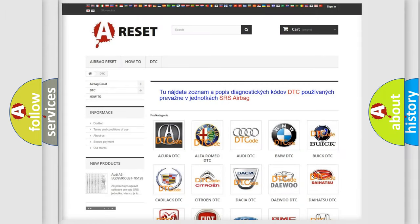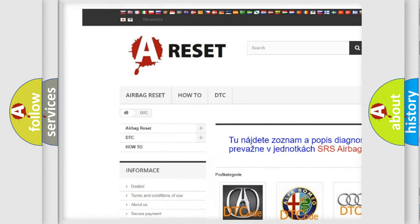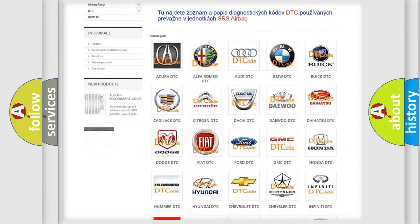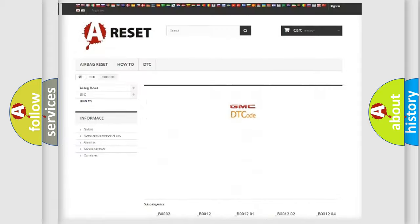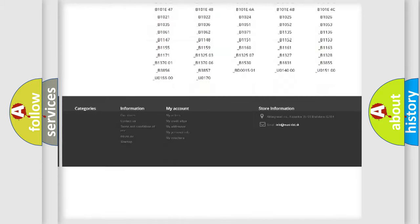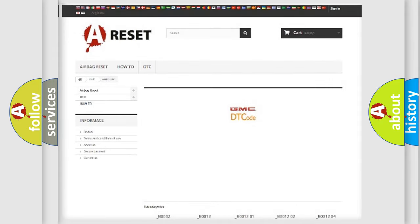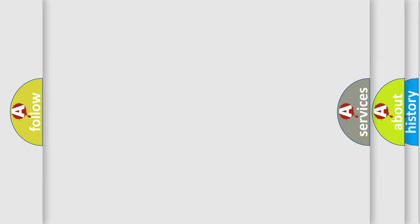Our website airbagreset.sk produces useful videos for you. You do not have to go through the OBD2 protocol anymore to know how to troubleshoot any car breakdown. You will find all the diagnostic codes that can be diagnosed in GMC vehicles. Also many other useful things.